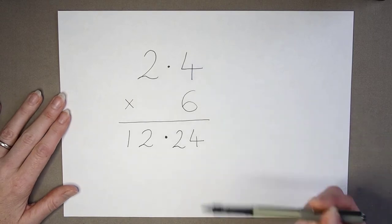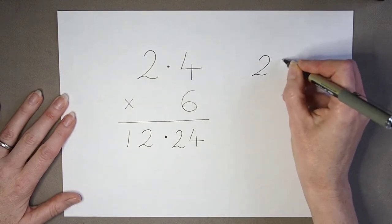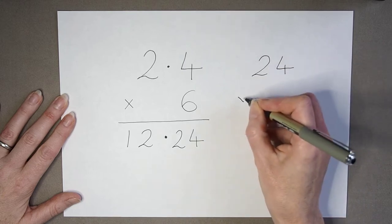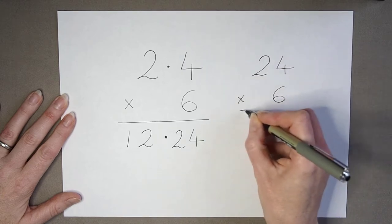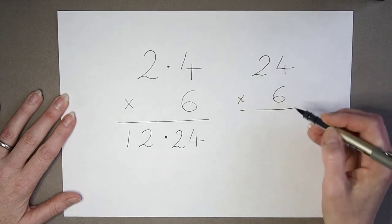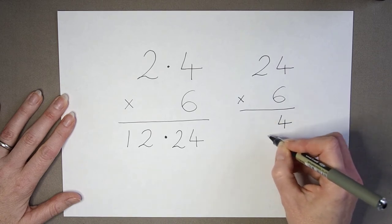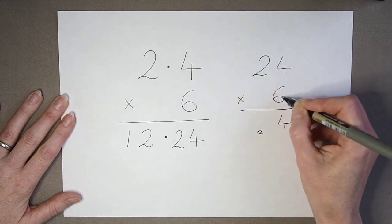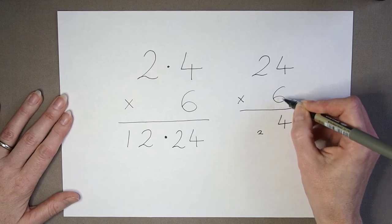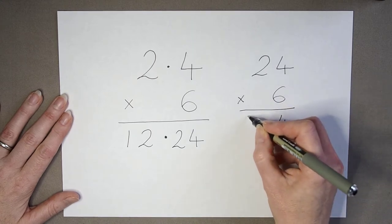If they miss out the decimal point at the start and work out 6 times 4 is 24 and 2 times 6 is 12, add on 2 is 4.